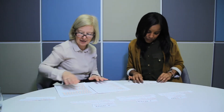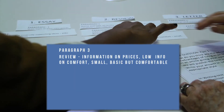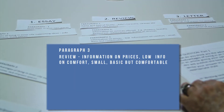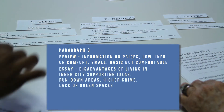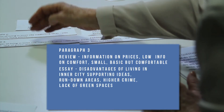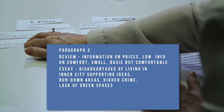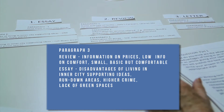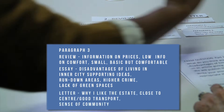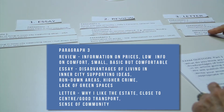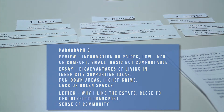Let's now look at paragraph three and do exactly the same. So this is the review. This is the essay, because we have our advantages, so now we're following it by our disadvantages. And the last one is the letter, because it's a personal one — 'why I like the estate.'